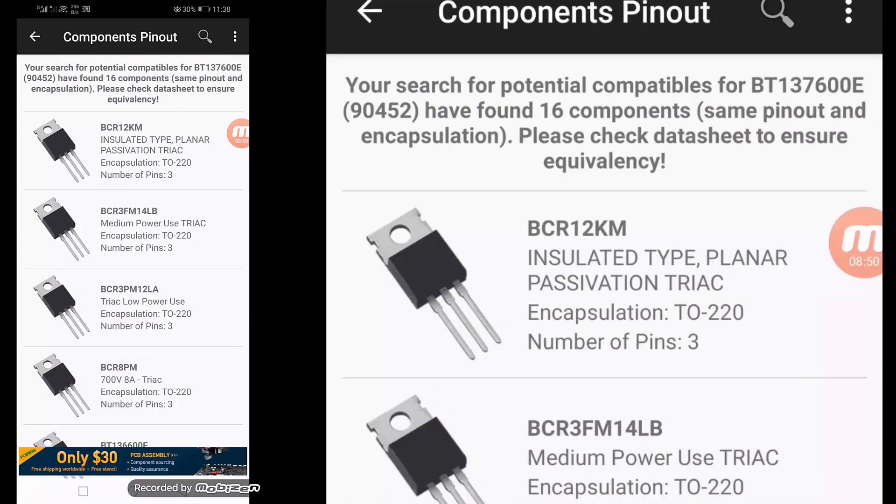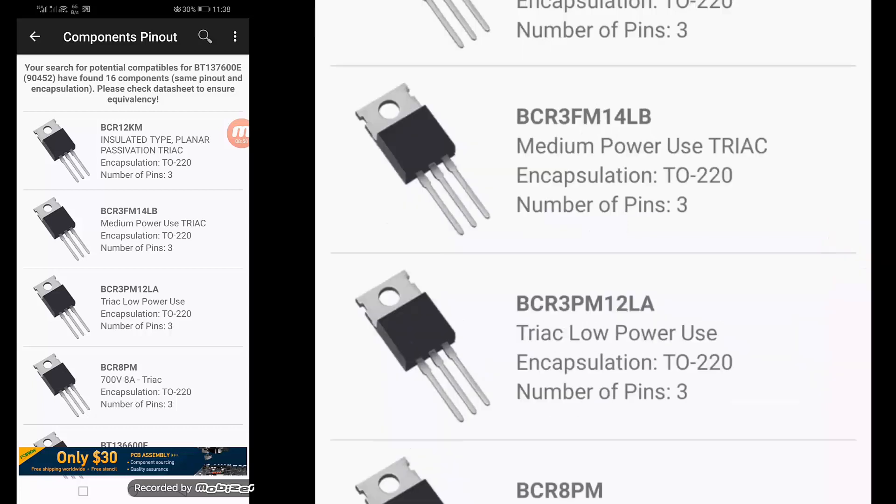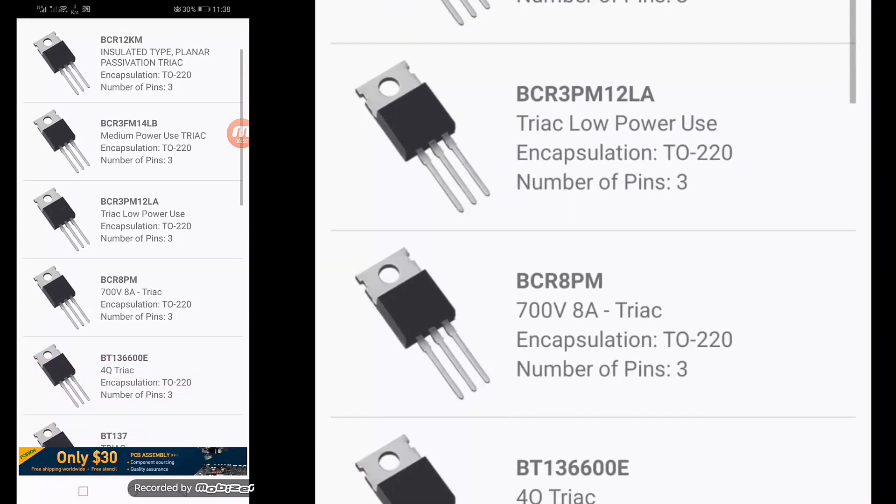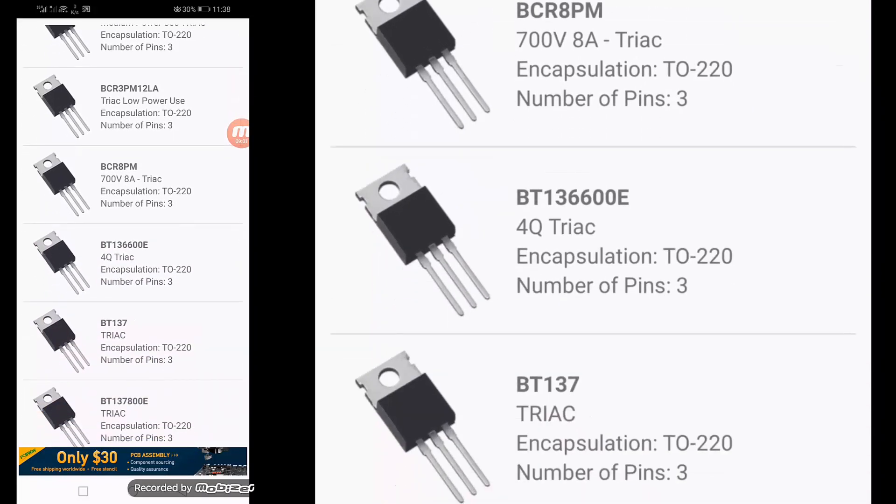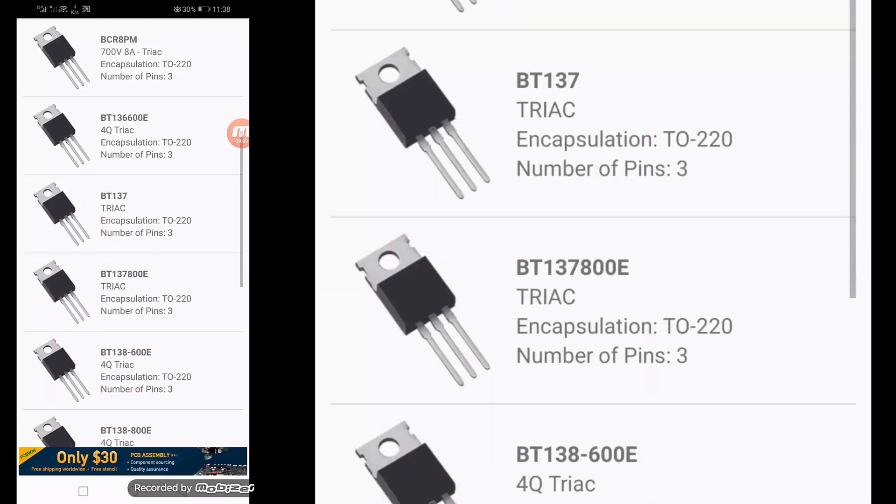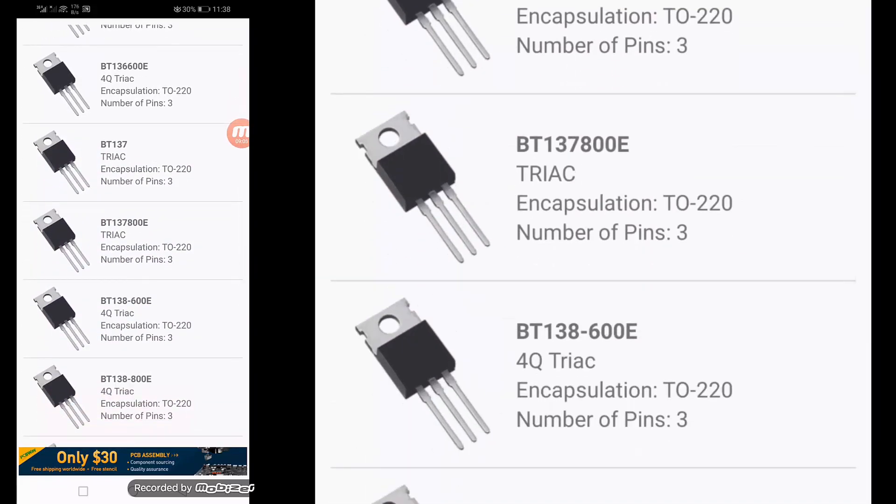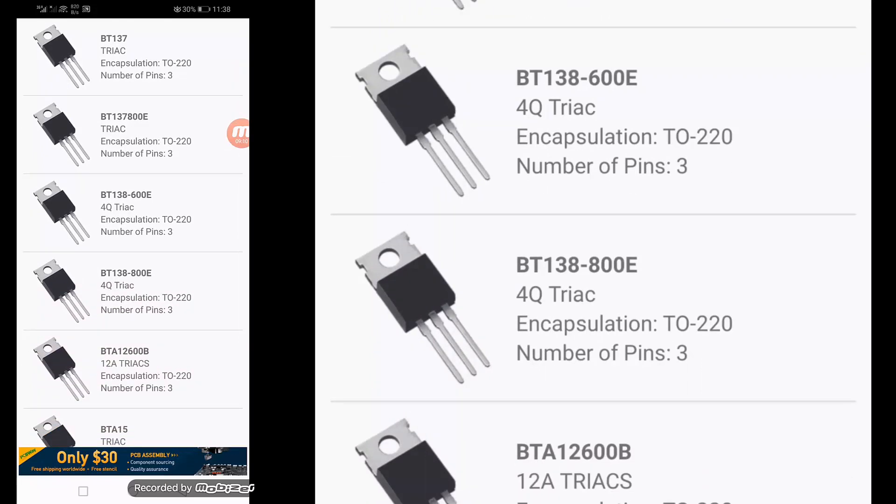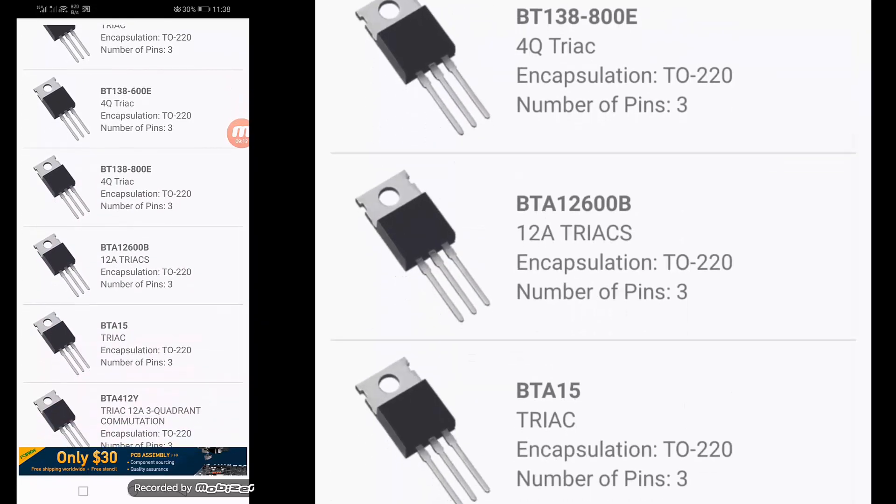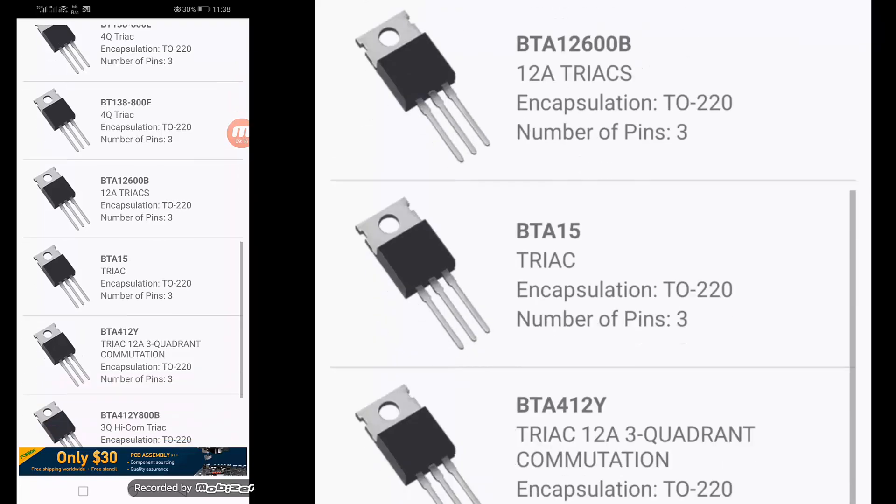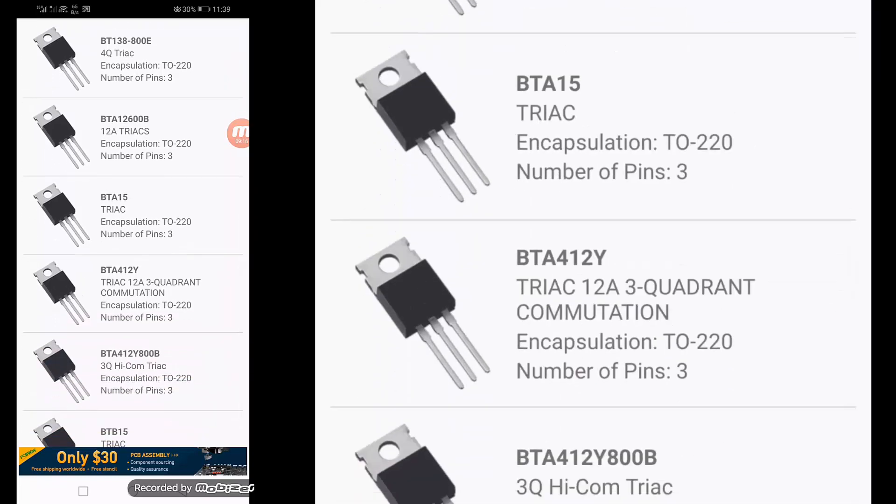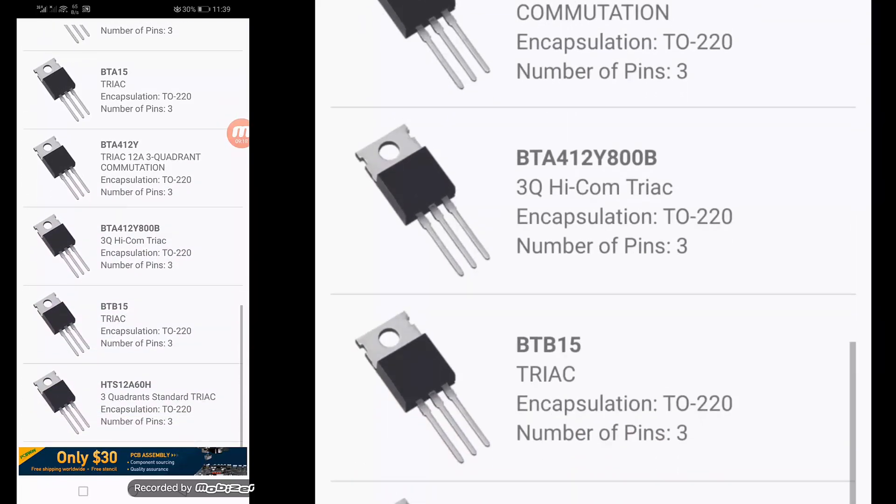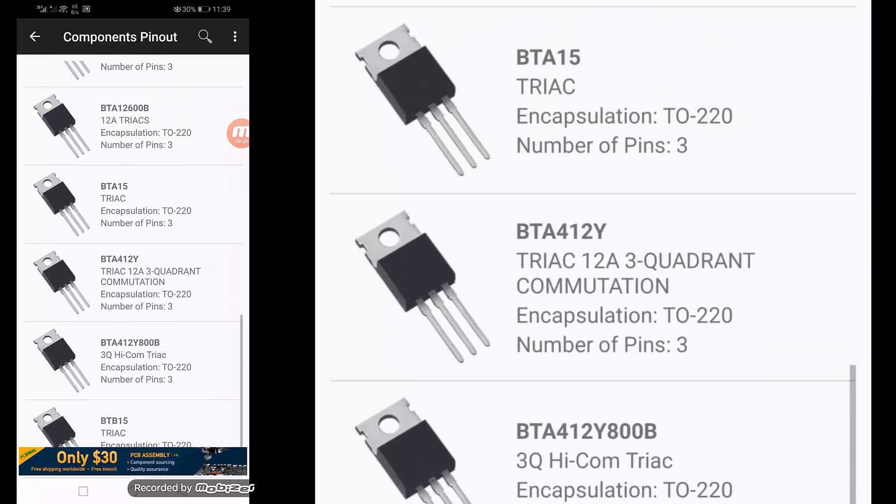BT137, search for replacements. Hit here. So it is BCR12CM, BCR3FM-14B, BCR3PM-12LA, BCR8PM, BT136, BT137-800, BTA1, BTA12-600, BTA15, BTA412. So all these part numbers are equivalent.